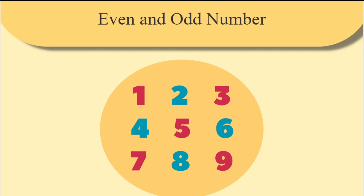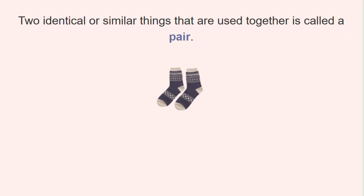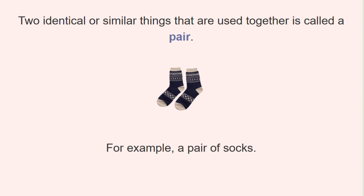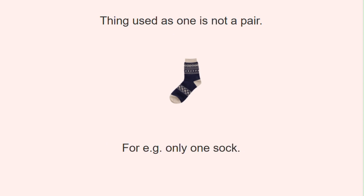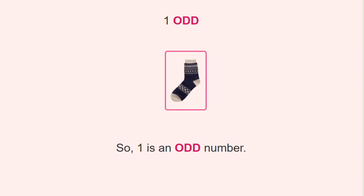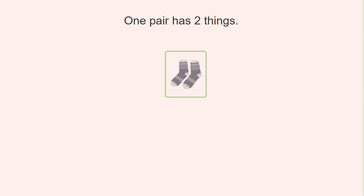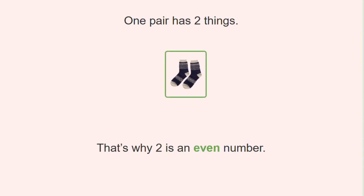Even and odd numbers. Two identical or similar things used together is called a pair — for example, a pair of socks. A single thing used alone is not a pair; for example, only one sock is one odd. So one is an odd number. One pair has two things, and that's why two is an even number.